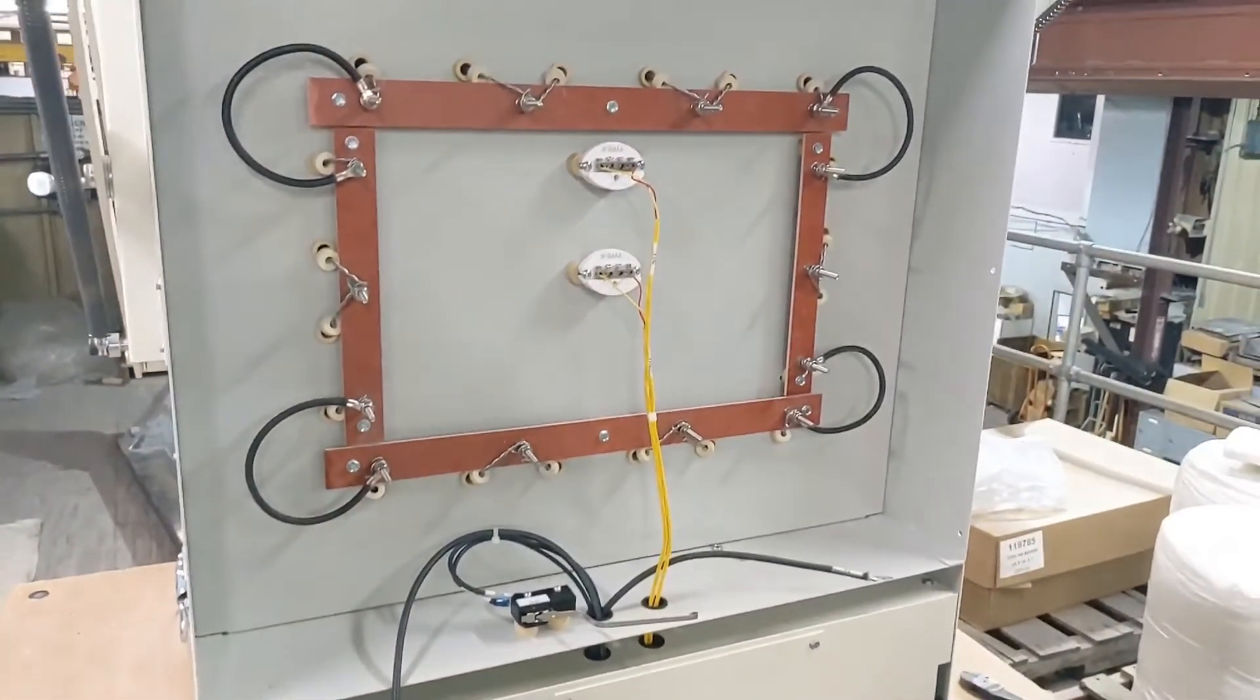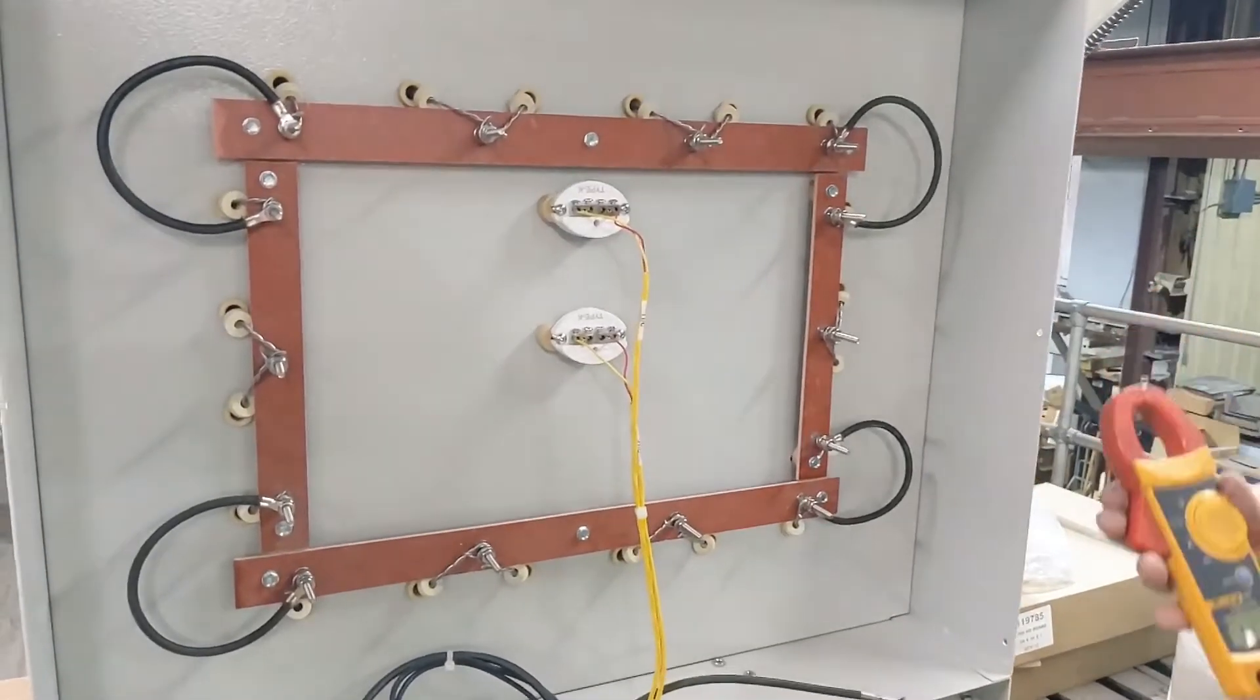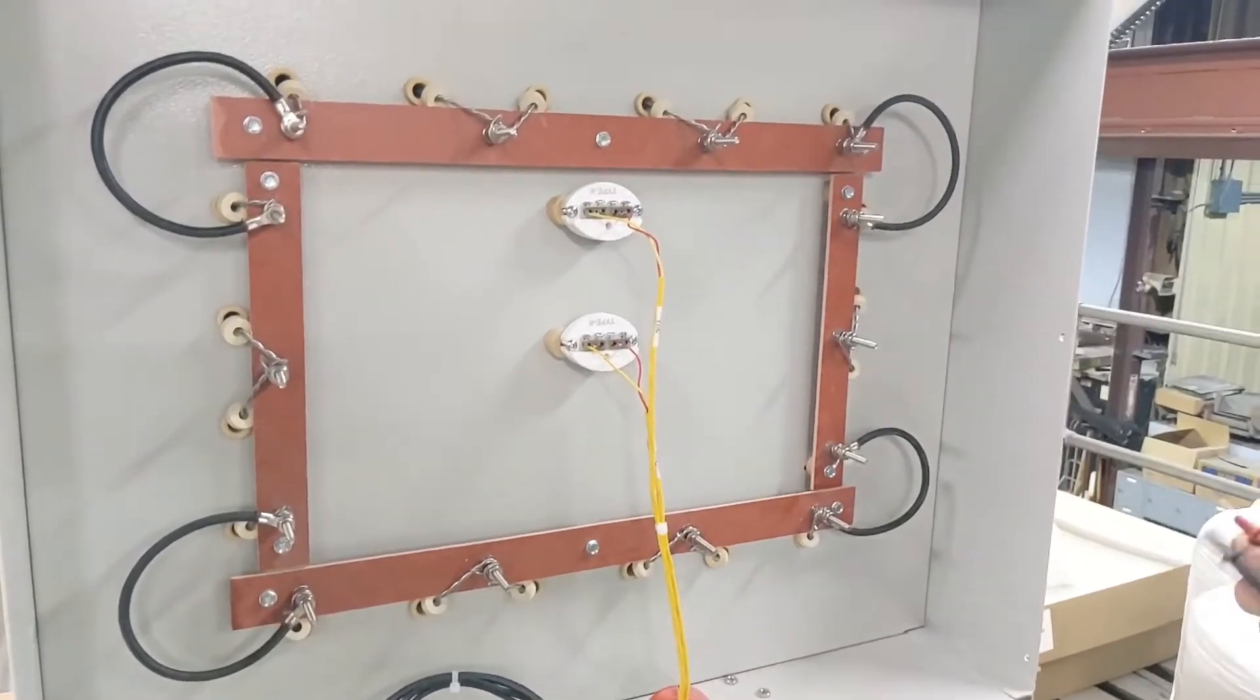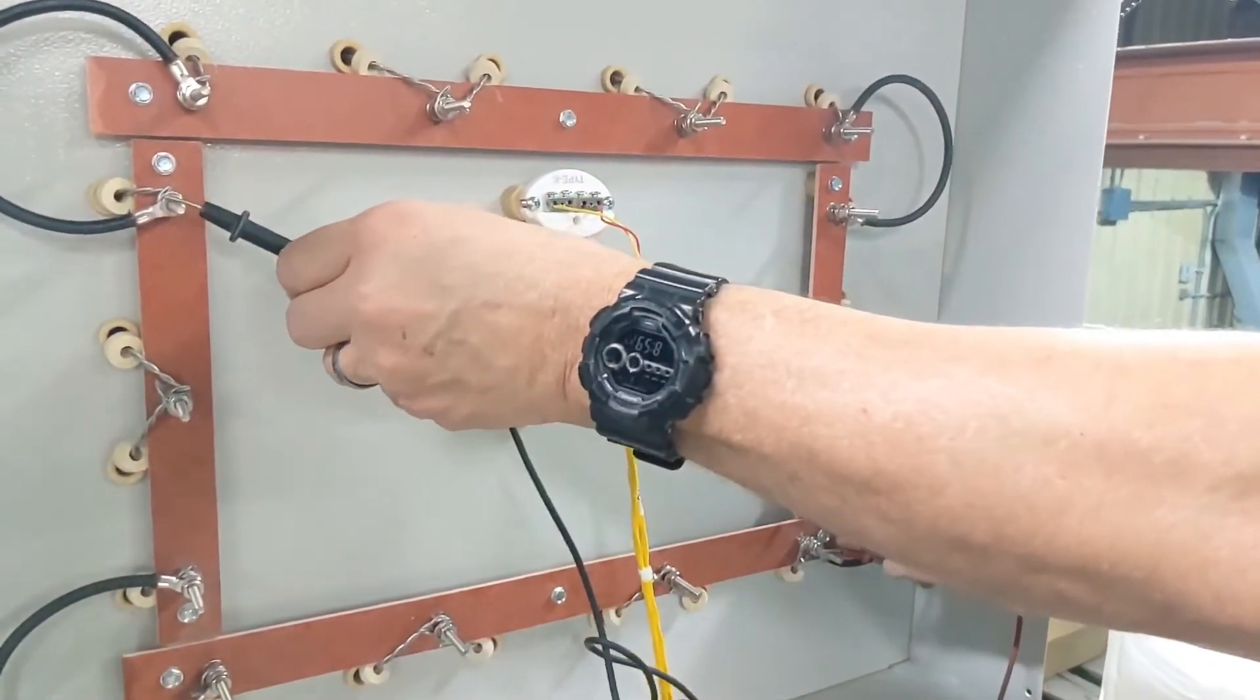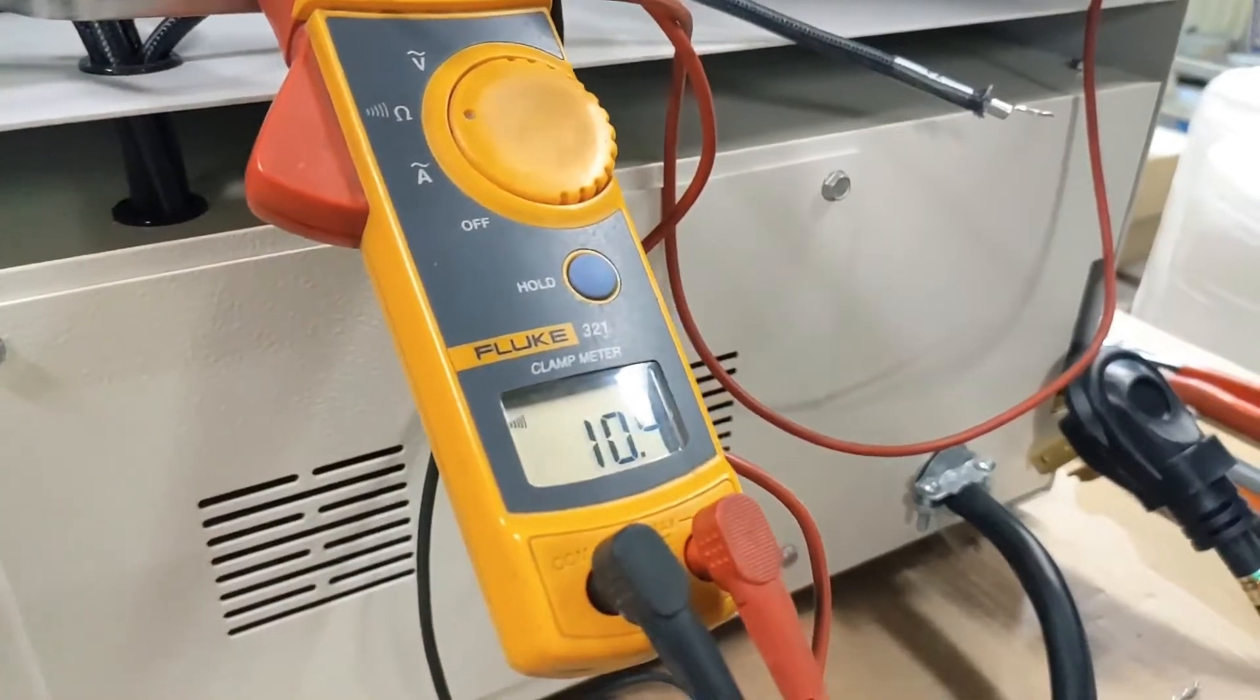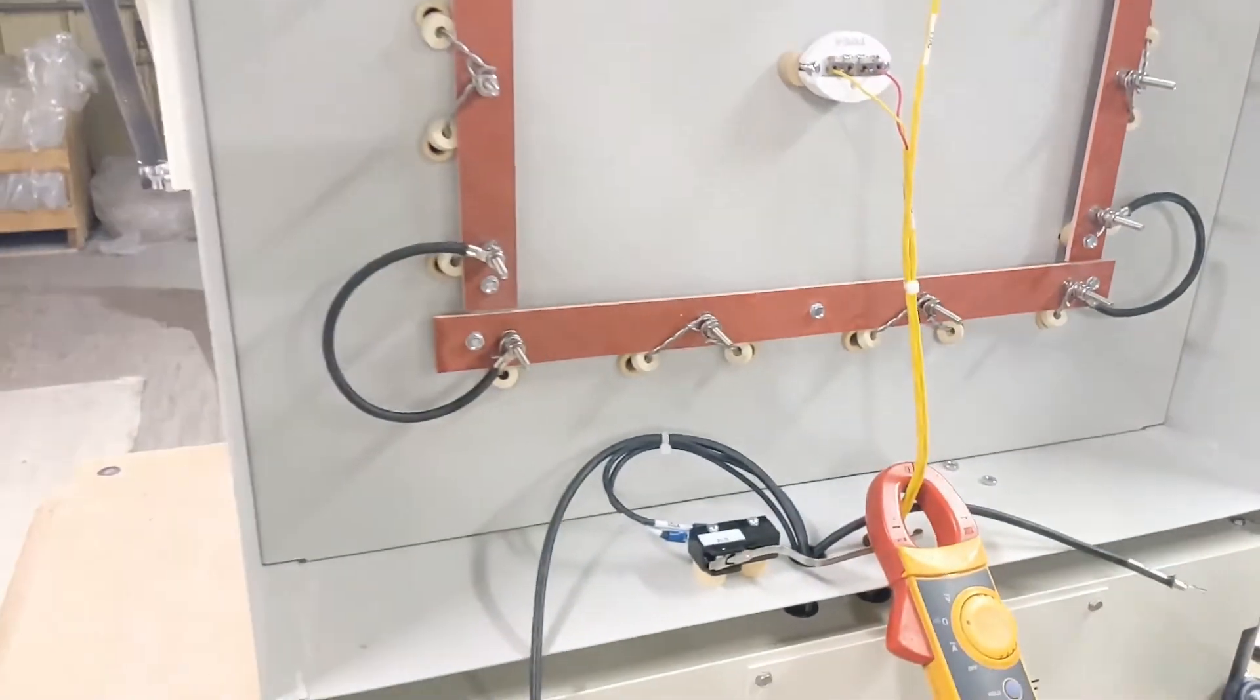Now the first step to checking that the elements are installed correctly is to check for resistance across the element loop. With a resistance meter, we want to check resistance on the studs shown. This will give us resistance through the full loop and we should be looking for about 10 ohms of resistance.